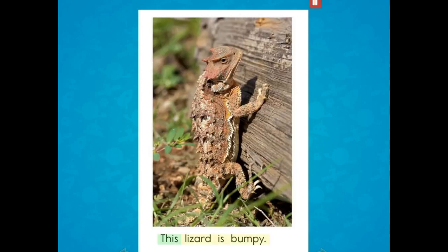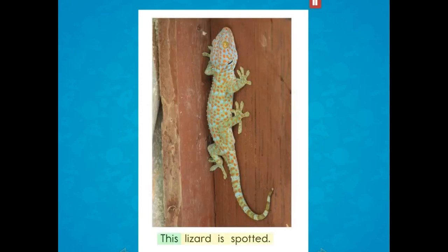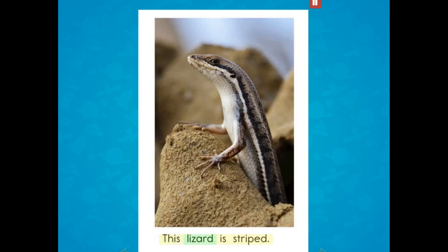This lizard is bumpy. This lizard is smooth. This lizard is spotted. This lizard is striped.